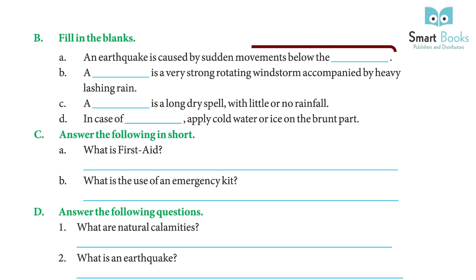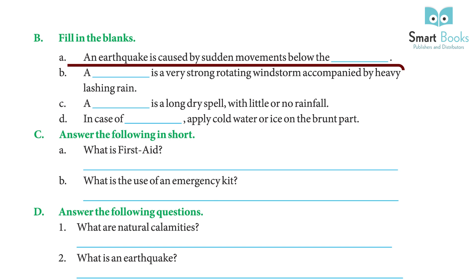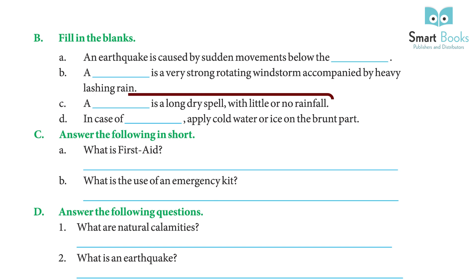Fill in the blanks. An earthquake is caused by sudden movements below the earth's surface. A cyclone is a very strong rotating windstorm accompanied by heavy lashing rain. A drought is a long dry spell with little or no rainfall. In case of minor burns, apply cold water or ice on the burnt part.